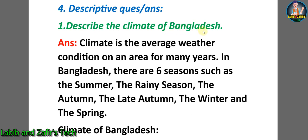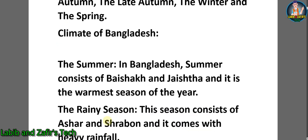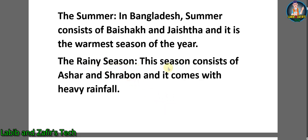Now our fourth topic is descriptive question answers. Question one: describe the climate of Bangladesh. Answer: climate is the average weather condition of an area for many years. In Bangladesh there are six seasons: the summer, the rainy season, the autumn, the late autumn, the winter, and the spring. The summer consists of Boishakh and Joishtha and it is the warmest season of the year. The rainy season consists of Ashar and Shrabon and it comes with heavy rainfall.